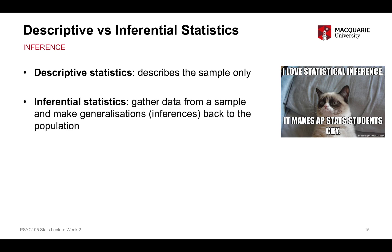Inferential statistics — and the process of using inferential statistics to answer research questions — is the idea that what you've learned from the sample, the information that you've obtained from the sample, you can then make generalizations or inferences back to a wider population. Research questions always apply to a population. Data is obtained from a sample, but the conclusions you make always go back to the population. The fact that the sample is representative of the population is really, really important.